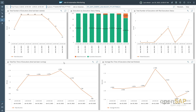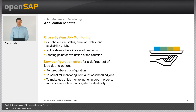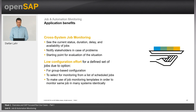With this, I end the demo and return to the slides to summarize the application benefits. With job and automation monitoring, it is possible to monitor job and automation tasks cross-system — seeing current status, duration, delay, and availability. You can notify stakeholders via configurable threshold alerts. From a configuration perspective, the effort is relatively low because we offer grouping-based configuration, monitoring from a list of scheduled jobs, and job monitoring templates to monitor the same jobs in many systems identically — mass maintenance is provided.